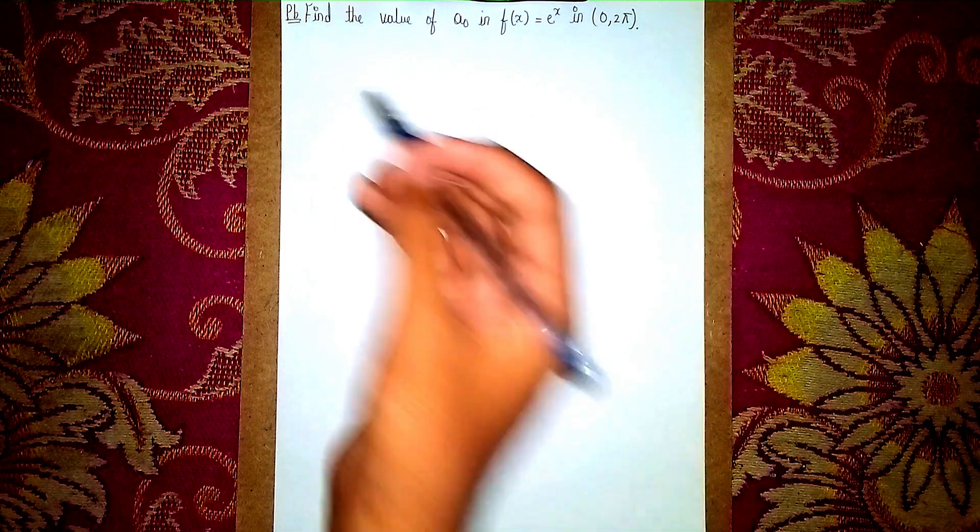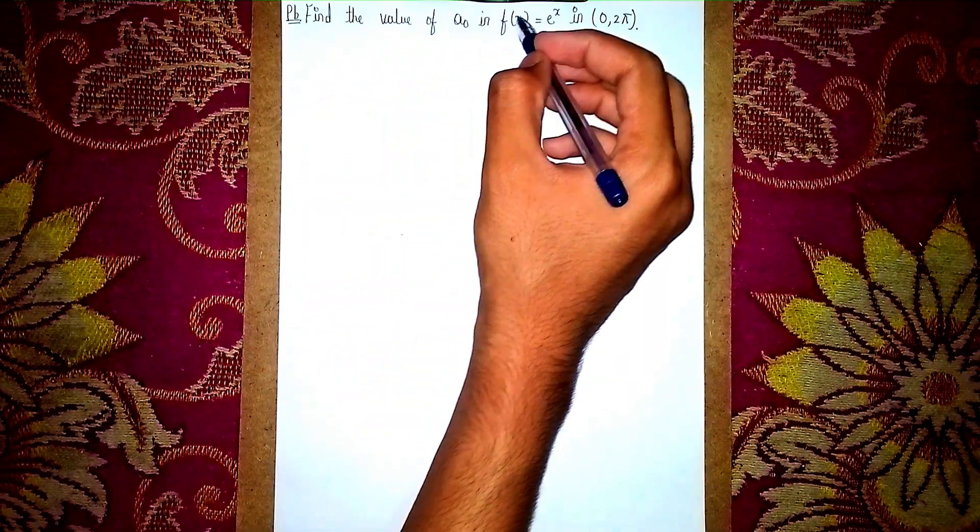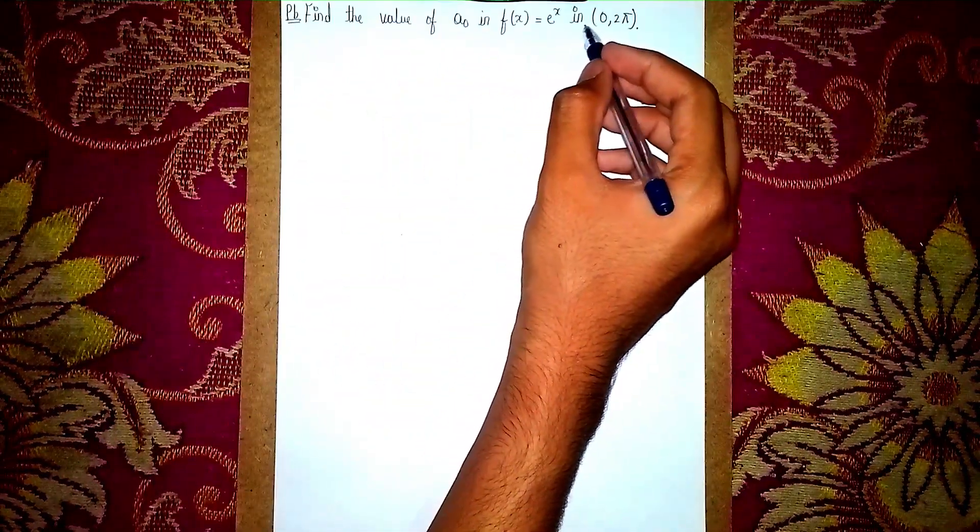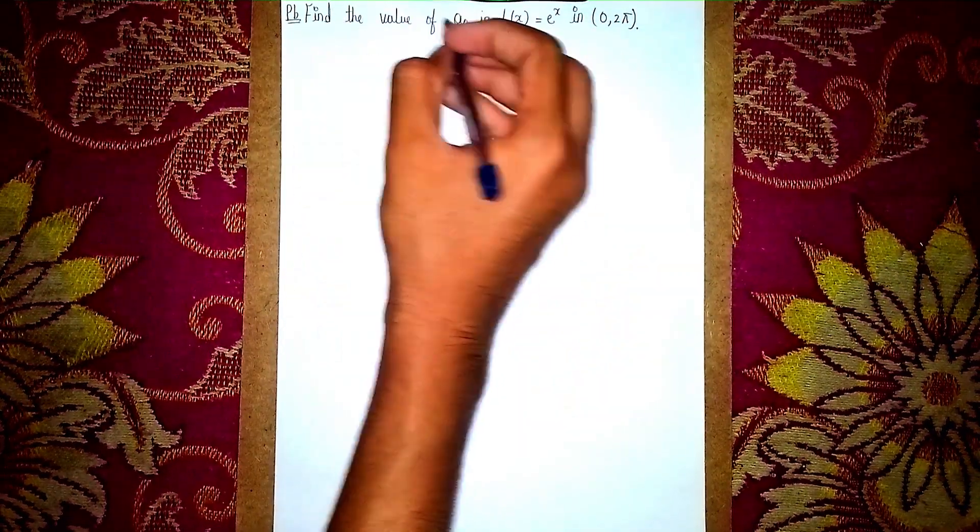Welcome back to my channel. Today's question: find the value of a₀ in f(x) = e^x for [0, 2π]. This is a Fourier series, so first we'll find the value of a₀.